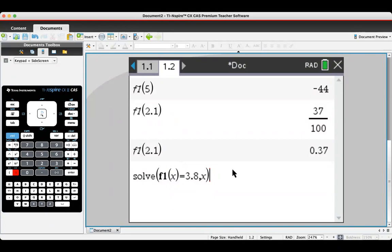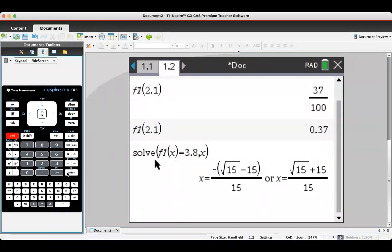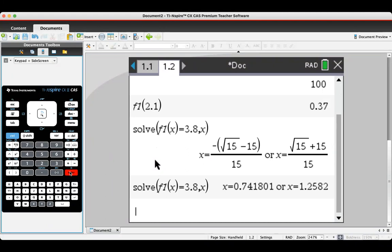And then press return, and I get the solutions for x. Again, this is in exact form, which is not always particularly useful, so I'll go ctrl enter again, and I've got x equals 0.7418 or x equals 1.25.